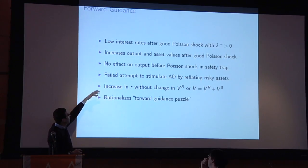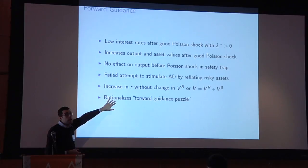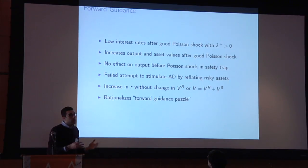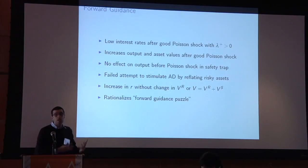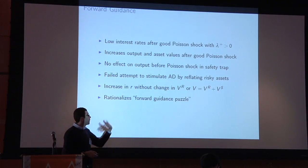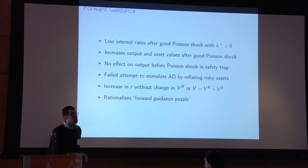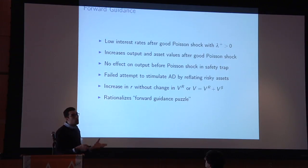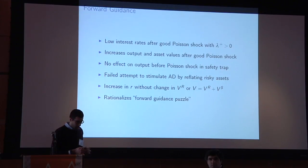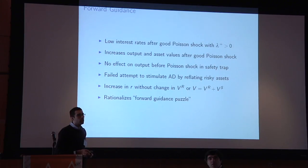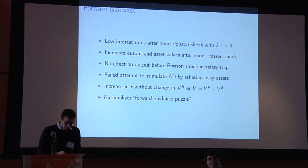This connects with a term people are starting to use: the 'forward guidance puzzle' — the idea that forward guidance works beautifully in some of our models but doesn't seem to have as much leverage in practice. For example, Eggertsson and Woodford, with Alastair McKay, have another rationalization for this puzzle. As someone quipped: forward guidance works in theory but not in practice; and QE works in practice but not in theory. Here it doesn't work in theory and it doesn't work in practice — so at least it's consistent.